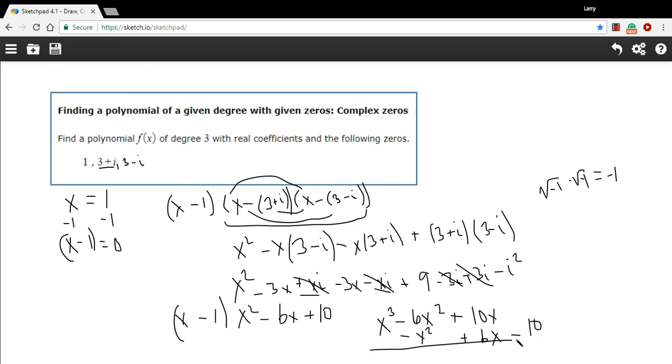And we'll go ahead and add these up together. So I get x cubed and a negative seven x squared and a plus sixteen x and a minus ten. And that is our third degree polynomial that has these zeros.